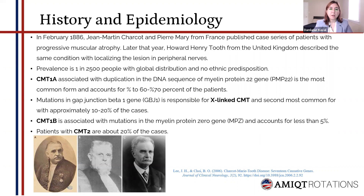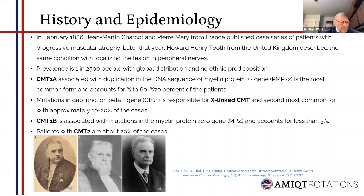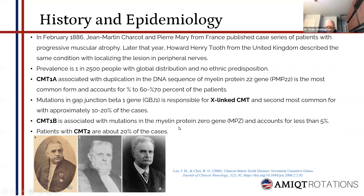Prevalence is one in 2,500 people with global distribution and no ethnic predisposition. CMT1A, associated with duplication in the DNA sequence of the myelin protein 22 gene, is the most common form, accounting for 60 to 70 percent of patients. Mutations in the gap junction beta-1 gene are responsible for X-linked CMT and the second most common form, with approximately 10 to 20 percent of cases. CMT type 1B is associated with mutations in myelin protein zero gene and accounts for less than 5 percent, and CMT type 2 represents about 20 percent of cases.